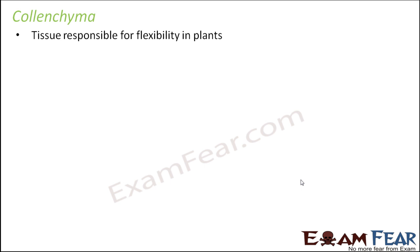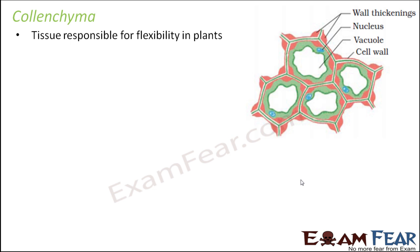So where do we see this colenchyma? It is generally present below the epidermis. Epidermis is the outermost layer of the plant, so just below the outermost layer, colenchyma is present. Talking about its structure, looking at this picture, you can see that one important thing present here is the vacuoles — quite big vacuoles. Secondly, if you look at the cell wall, the cell walls are quite thick, and it's quite thickened at the corners.